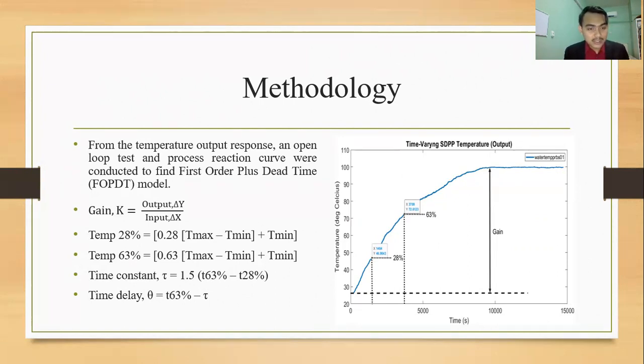After that, to find the time constant or tau, 1.5 is multiplied with 63% of time minus 28% of time. Then to find the time delay theta, theta equals 63% of time minus tau.